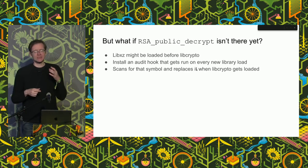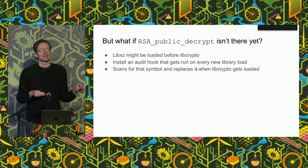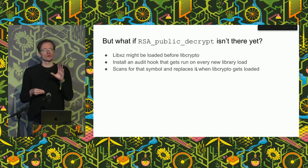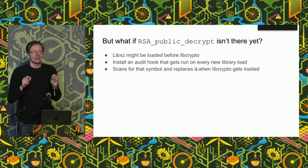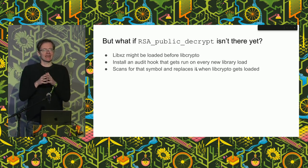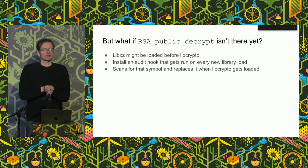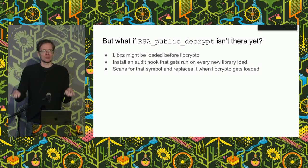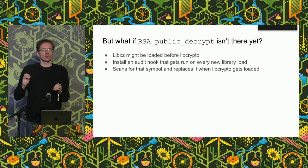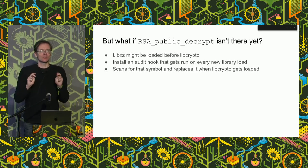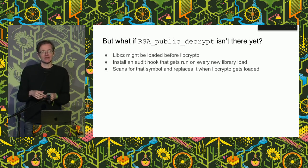Except it's not actually that easy, because rsa_public_decrypt is not in sshd itself — it's in libcrypto. And you don't know in advance what order libraries are going to be loaded. So libxz could be imported before libcrypto, and in that case rsa_public_decrypt isn't there yet. To deal with this, the function installs a hook. The runtime dynamic linker has support for audit hooks — you can ask it to call back into a registered function every time a certain event occurs, for debugging or security purposes. So it installs an audit hook, and every time a new library is loaded, that hook scans to see whether the new library added rsa_public_decrypt. And if so, it replaces rsa_public_decrypt with a pointer back into the backdoor code.